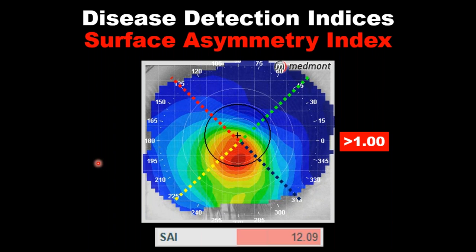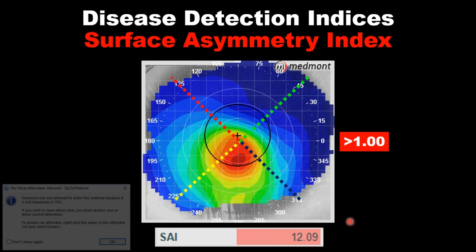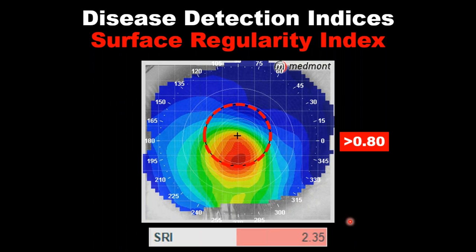When the Surface Asymmetry Index is greater than 1, that would be considered an irregular cornea — and this patient is coming up as 12, so it's very asymmetric. La medida científica nos dice que cuando ese índice de asimetría de la superficie es mayor de 1, es indicativo de una córnea anormal o irregular. En el caso que tenemos, ese índice fue de 12.9, indicando una severidad bastante grande.